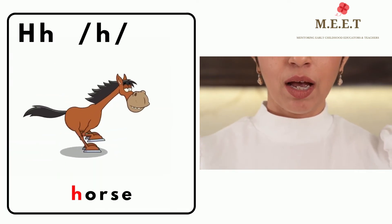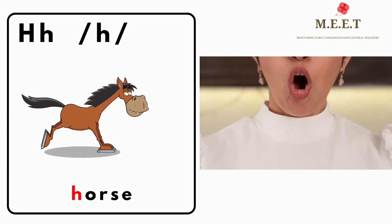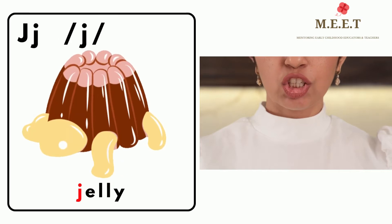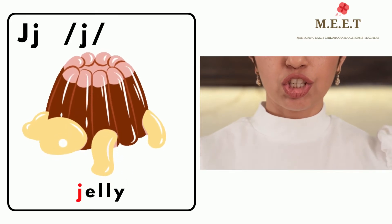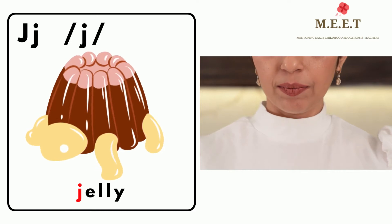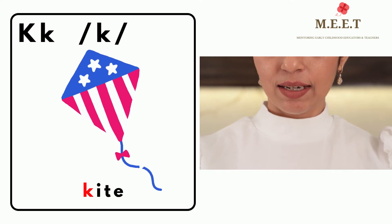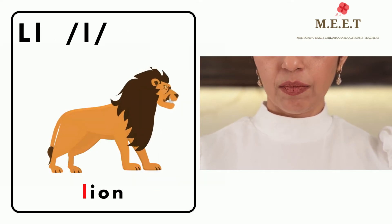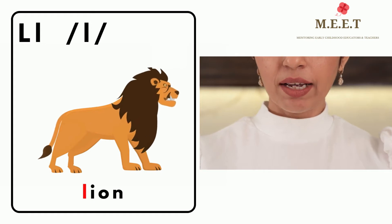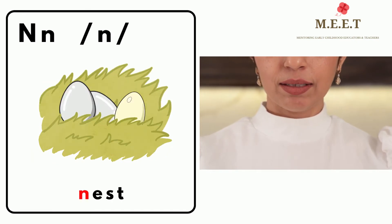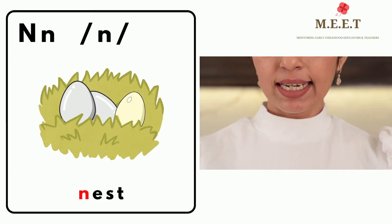'h' as in horse. 'i' as in itch. 'j' as in jelly. 'k' as in kite. 'l' as in lion. 'm' as in monkey. 'n' as in nest.